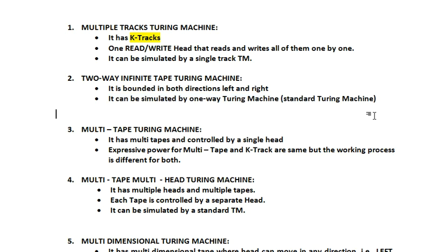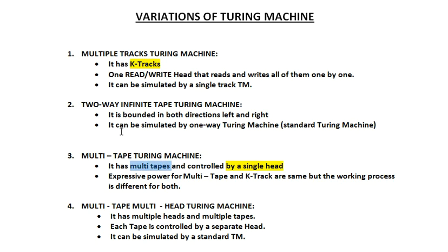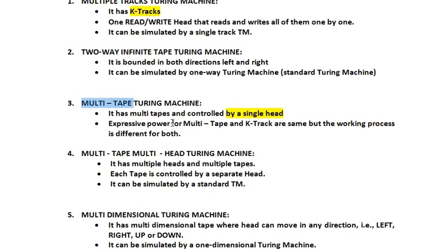The third variant is the Multi-Tape Turing Machine. Here, there is only a single head, but there are multiple tapes. In terms of expressive power, multi-tape and K-track are essentially the same concept — a single tape divided into multiple tracks. There is no significant difference between multiple tracks and multi-tape Turing machines; the single read/write head reads and writes all of them one by one.